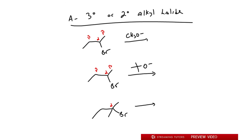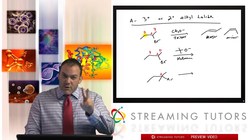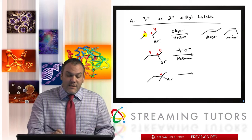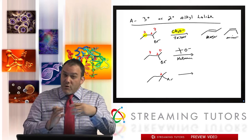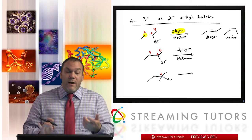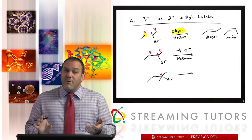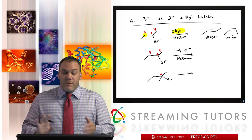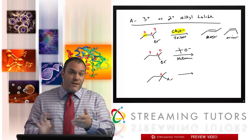The right carbon has three H's — that's the Hoffman location — and the left carbon has two H's — that's the Zaitsev location. With a small base we favor Zaitsev. We would make the Zaitsev alkene as the major product and the Hoffman alkene as the minor product. When you make the alkene at the Zaitsev position you can have either cis or trans, because if the beta carbon has two H's you can rotate to get both — but the major product is trans because that's more stable.